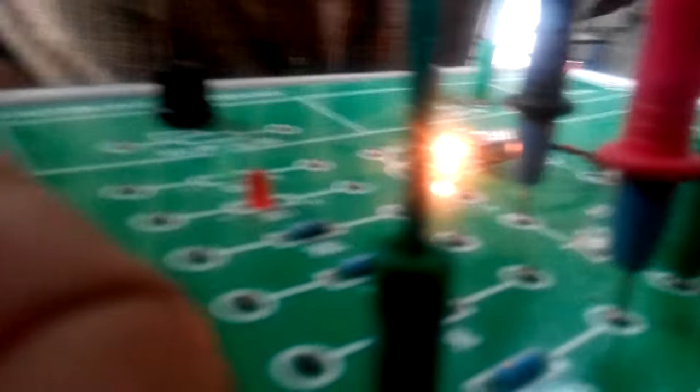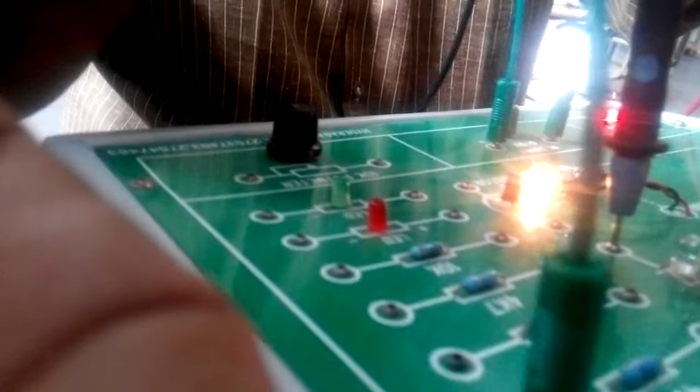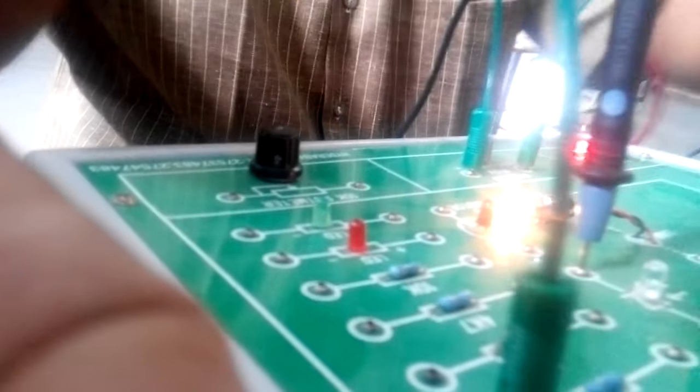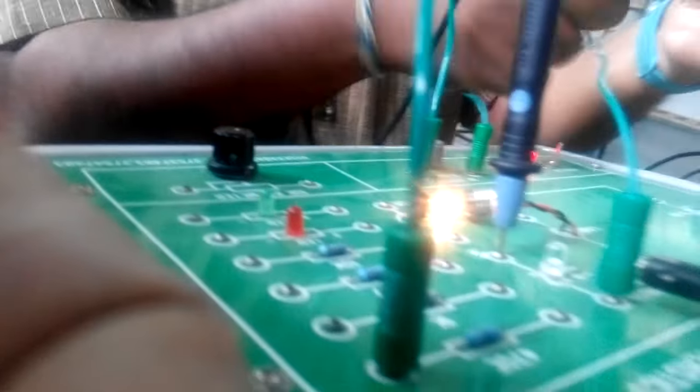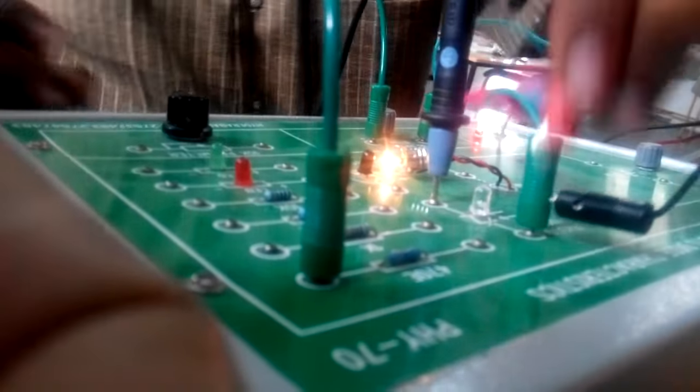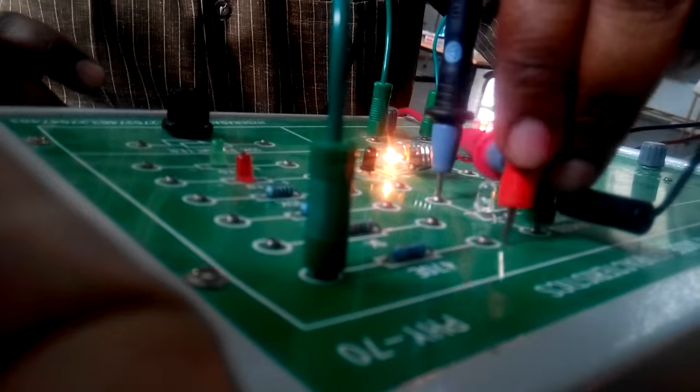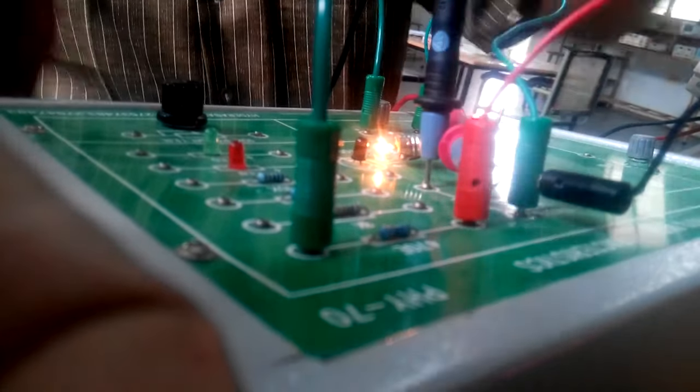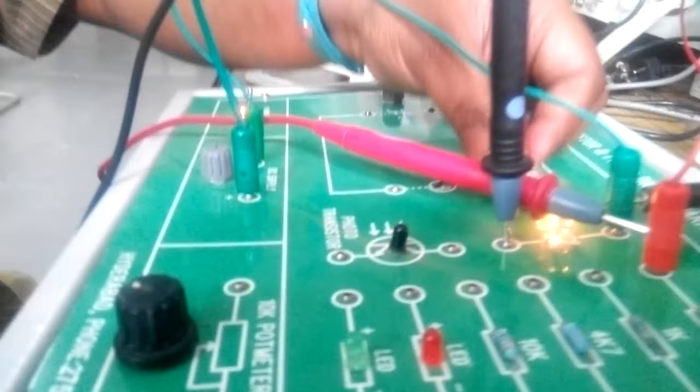Now connect your multimeter which is in voltmeter mode across these two points and keep your bulb near your photodiode.